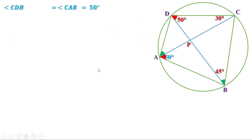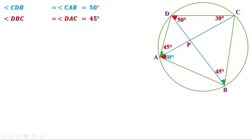Now look at these two angles — they are angles made by arc DC on its alternate arc, so they are also equal. Since this angle is 45 degrees, this angle is also equal to 45 degrees; that is angle DAC equal to 45 degrees. Now, angle A equals 50 plus 45, which is 95 degrees. So we got one angle of this quadrilateral.